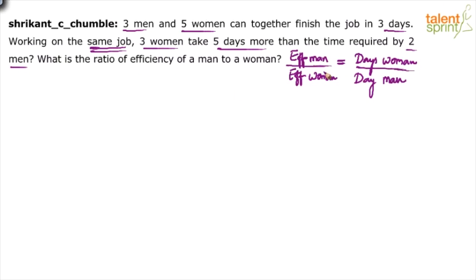The idea is to find out the number of days required by a man versus the number of days required by a woman. We need to frame two equations with two unknowns. Since options are not given here, we'll have to work through the algebra, but if options are given we could try substituting them.